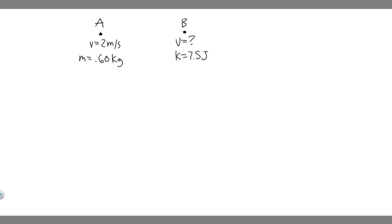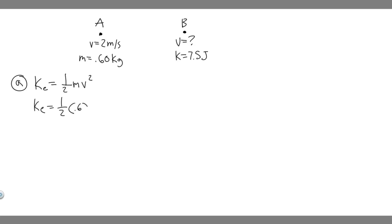Let's start with A — finding the kinetic energy at point A. The formula for kinetic energy is KE = ½mv². We plug in the mass of 0.6 and the velocity of 2: ½ × 0.6 × 2² = 0.5 × 0.6 × 4 = 1.2 joules. So 1.2 joules is the kinetic energy at point A.